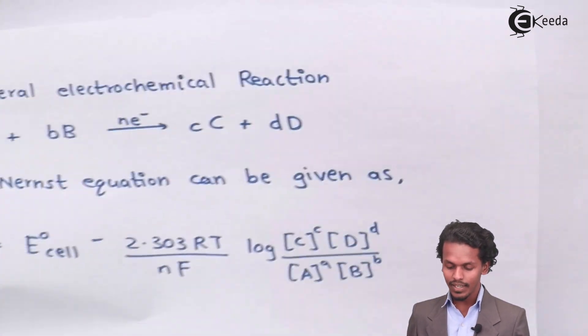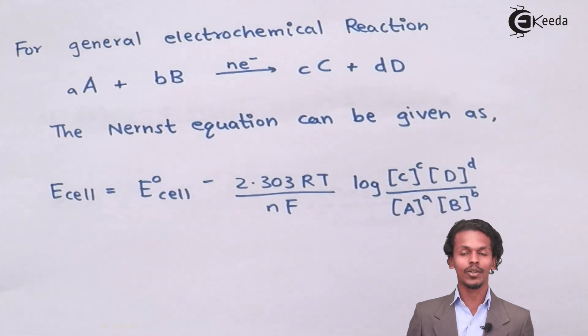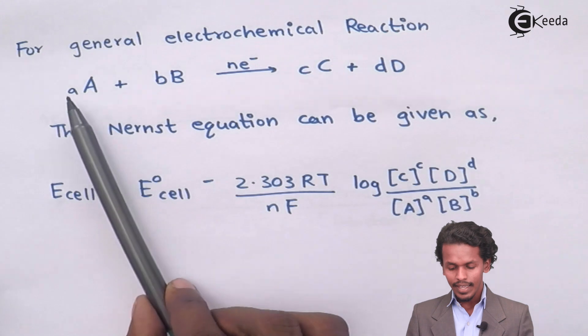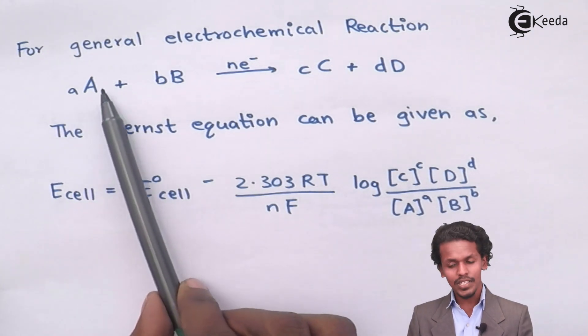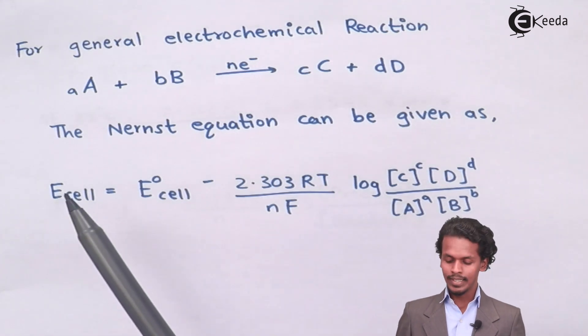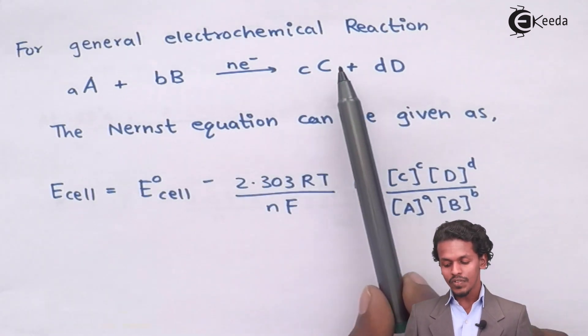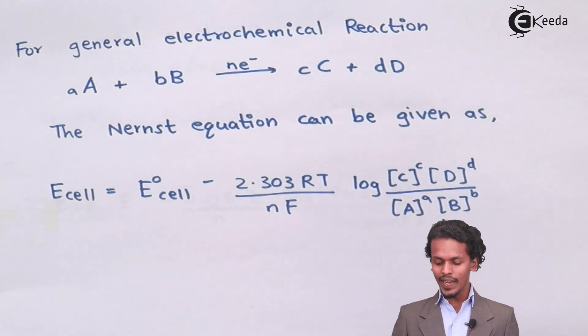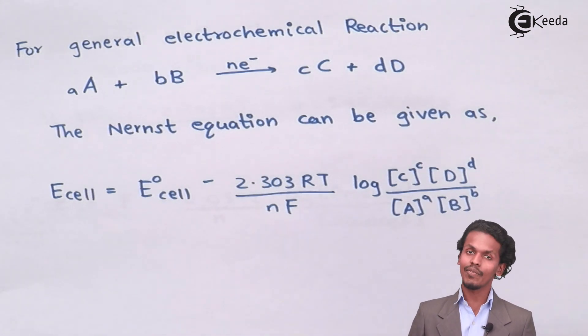For that, I have represented a general formula or general electrochemical reaction, in which suppose a moles of A plus b moles of B, in which n moles of electrons are being involved, so as to give c moles of C plus d moles of D. If in this case I apply the Nernst equation, the thing that we could get is,